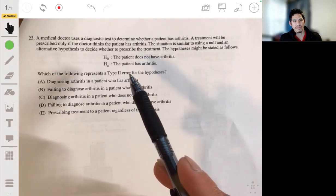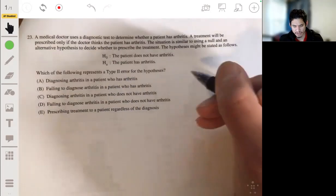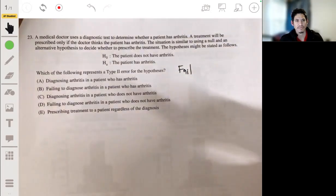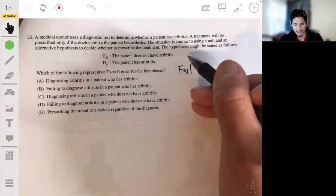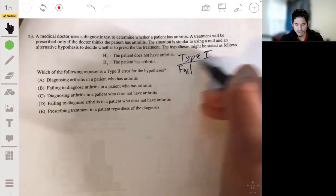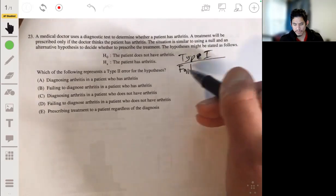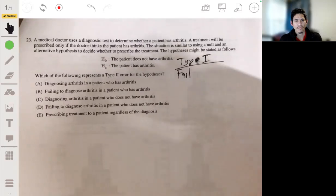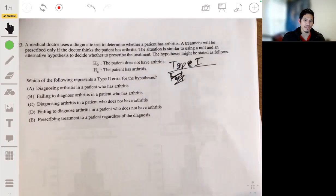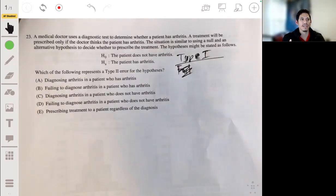Which of these represents a type 2 error for these hypotheses? Okay. So let's remember what type 1 and type 2, I mean, you have two types of error. Type 1 is when, type 1, let me just say it first, so I don't mess up. A type 1 is when you reject the null hypothesis when it's actually true.